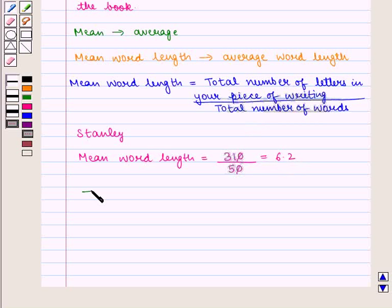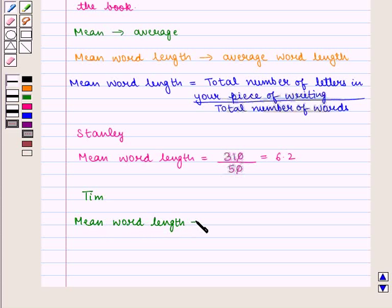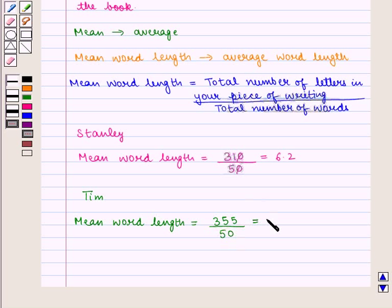Similarly, for Tim, mean word length in the sample is given by total number of letters in his piece of writing, which is equal to 355, divided by total number of words, that is 50, which is equal to 7.1.